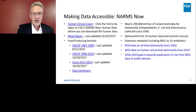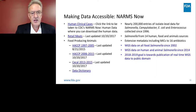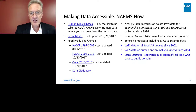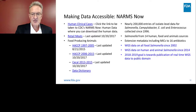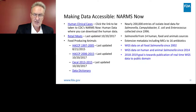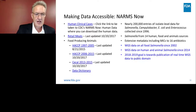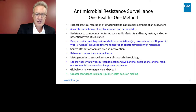One way we're trying to make data more valuable in the NARMS program is through a commitment to open, transparent, and public data sharing through a tool we call NARMS Now. It's basically the repository of all our isolate-level data — nearly 200,000 entries for Salmonella, Campylobacter, E. coli, and Enterococcus collected since 1996. It has extensive metadata, including MICs to 16 antibiotics. The whole genome sequencing data is going up into NCBI, and we're trying to link it to our NARMS Now spreadsheet so you can download the entire program essentially and take advantage of the data for your own research or public health purposes. The goal is to make this as real time as possible.